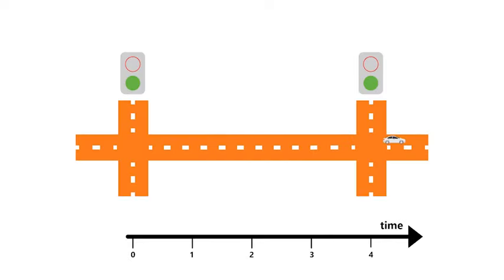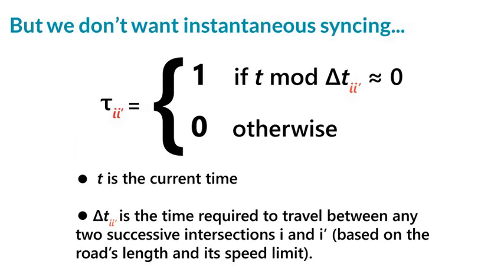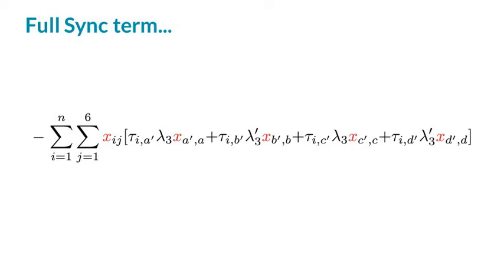But we don't want traffic signals to coordinate instantaneously as it takes time for a vehicle to move between intersections. They should synchronize only when a vehicle is close to the next intersection. To handle this we add tau i i' variables. They're zero if a vehicle hasn't had enough time to reach the next intersection, and turn one only if enough time has elapsed. This leads to green corridors, successions of green signals.